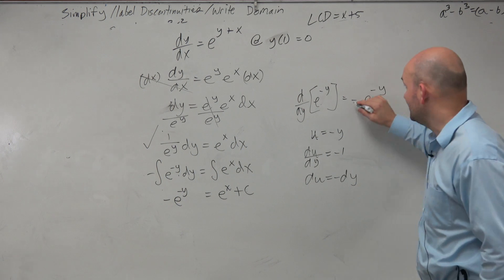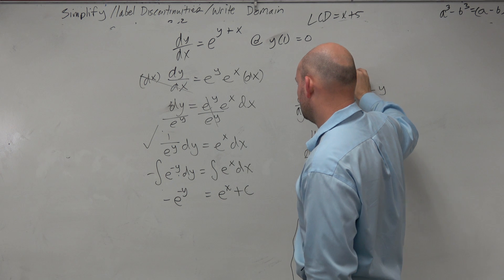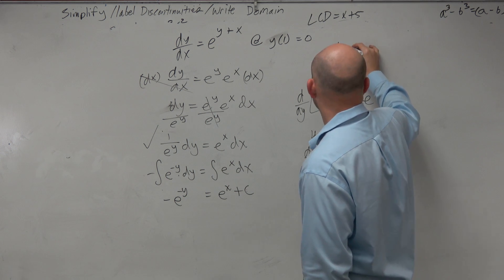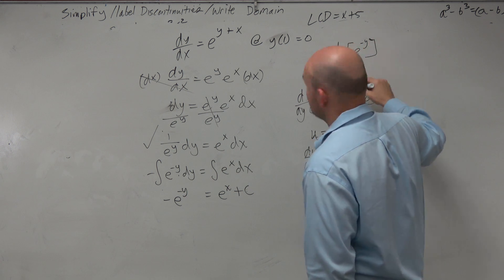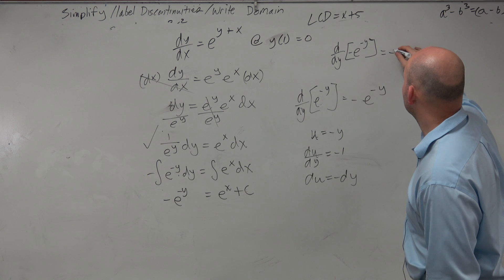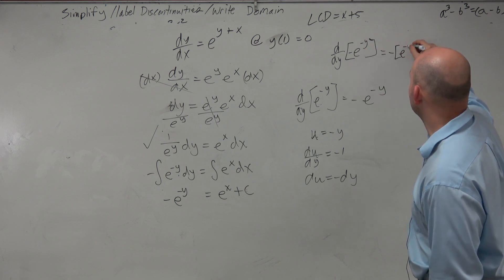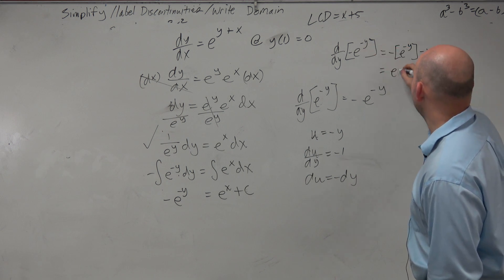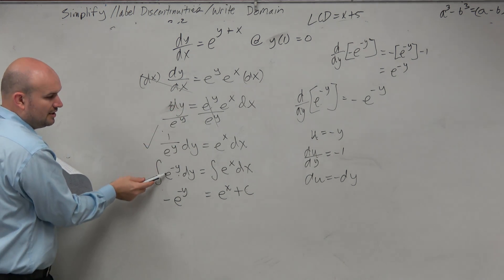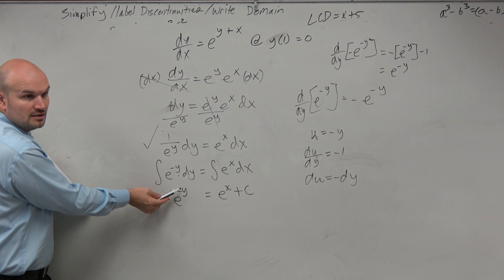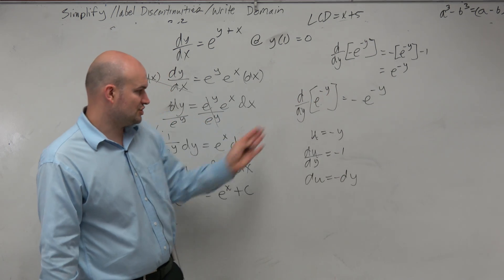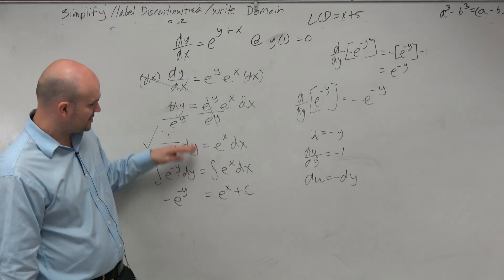Let's double-check that. We're saying the integral of e to the negative y is negative e to the negative y. So let's take the derivative: d over dy of negative e to the negative y. Take the negative out in front, then the derivative of e to the negative y is e to the negative y times the derivative of negative y, which is negative 1. Those two negatives give you e to the negative y, which is what we started with. So the integral of e to the negative y is negative e to the negative y. You can do the u-substitution, or just use pattern recognition to check the derivative and antiderivative.